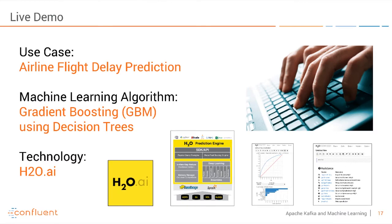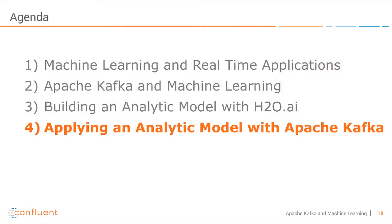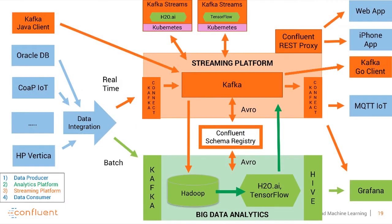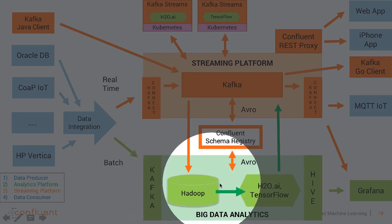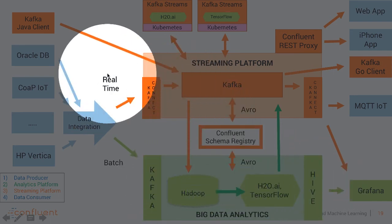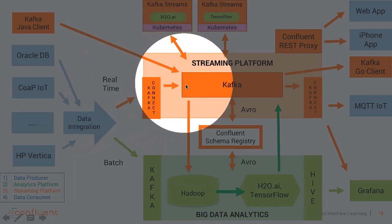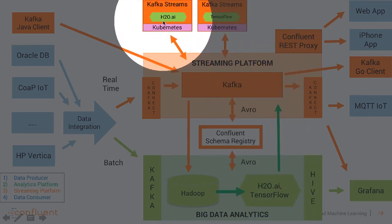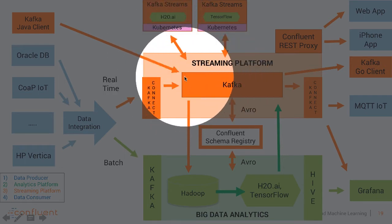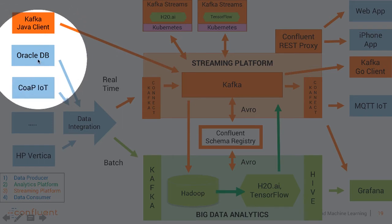Let's go back to our presentation. This was the first of the two steps — we built our analytic model. Now in the second step we want to apply that model in real-time to do predictions on new events, and here we leverage Apache Kafka. We built our analytic model on historical data in batch mode — which we could do once a day, once a week, or once a month. You could also do online training, where every single new event is used to train a model. We built our model with H2O and now deploy it to a Kafka Streams application, which we use in our streaming platform to do real-time predictions on any kind of new event coming from anywhere.